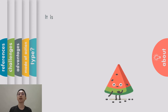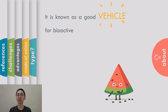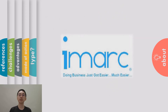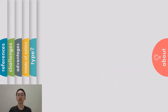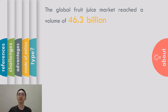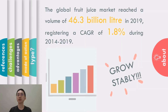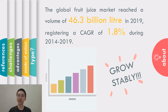It is known as a good vehicle for bio-active compounds due to their efficiency to impart health benefits. Based on the ANARC group, the global fruit juice market reached a volume of 46.3 billion litres in 2019, registering a cumulative annual growth of 1.8% from 2014 to 2019. In addition, the market is expected to grow steadily in the next 5 years.